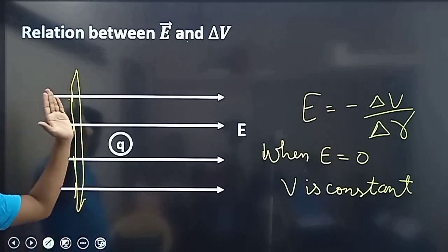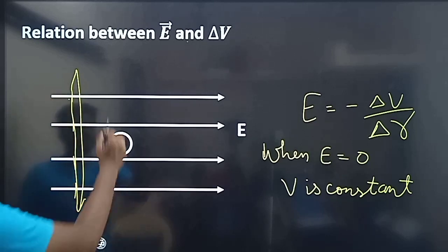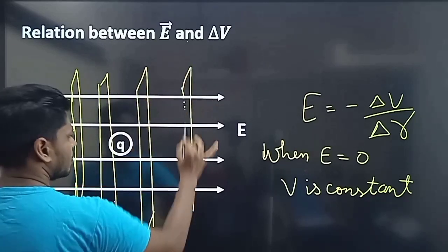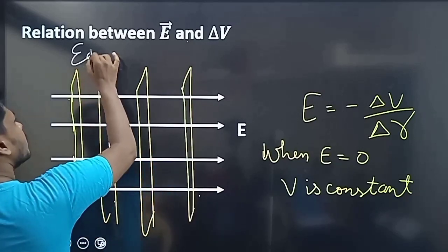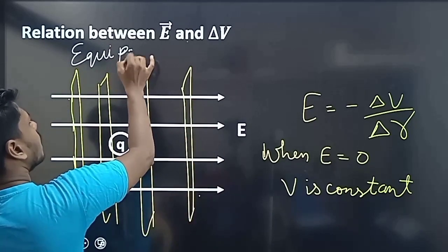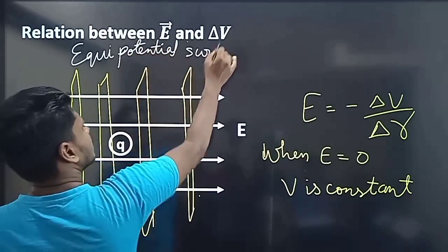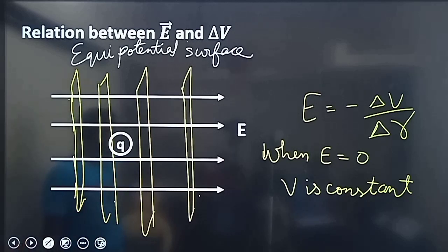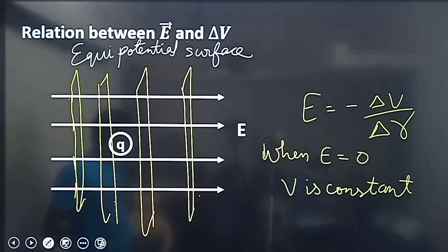Is it equal? Is it equal distance? The potential is equal here too — equal. What do you mean by surface? Potential is equal — equal potential surface. Equipotential. Equipotential surface. What is the potential on the surface? Equipotential surface.